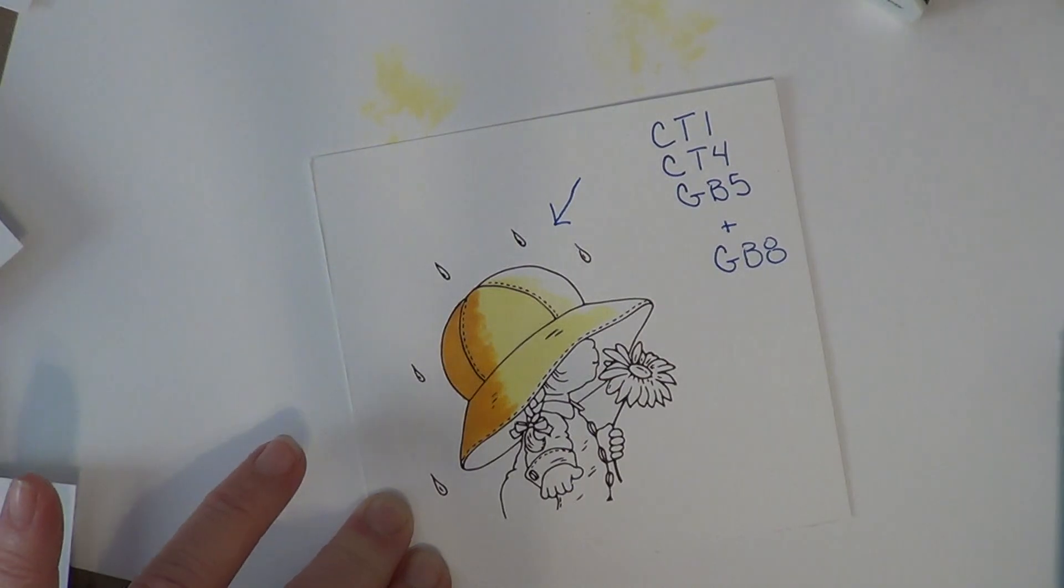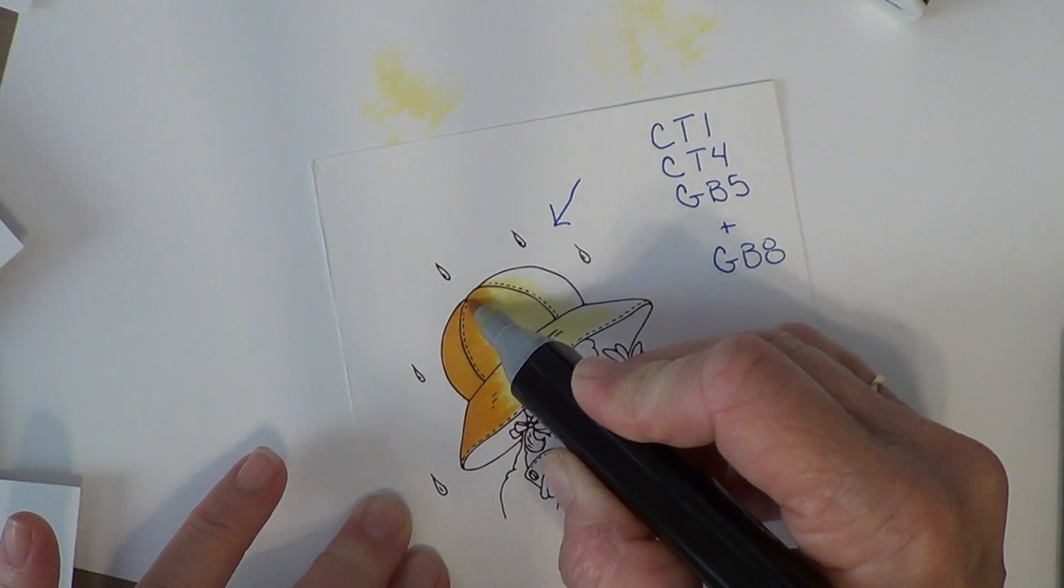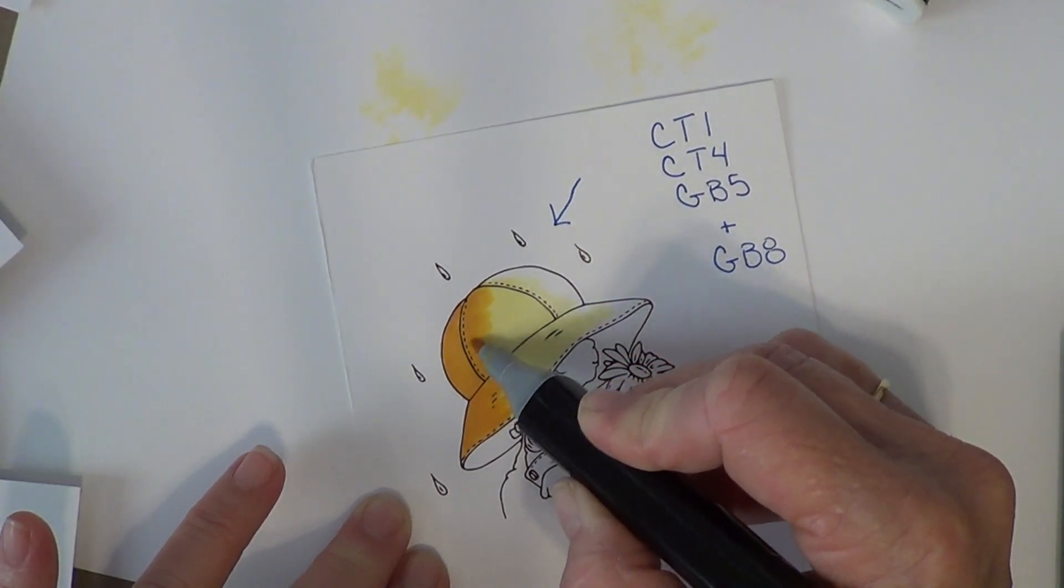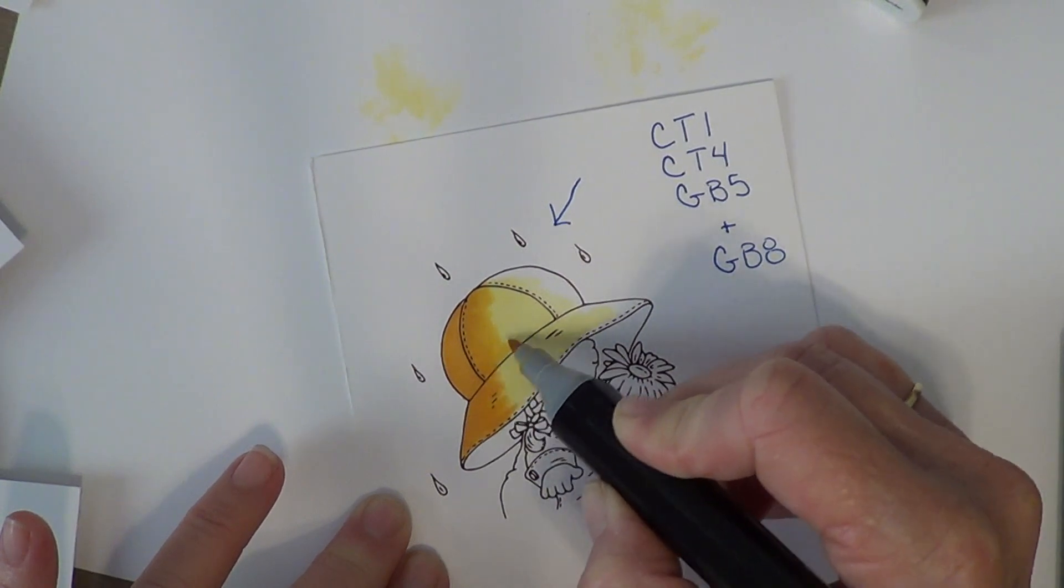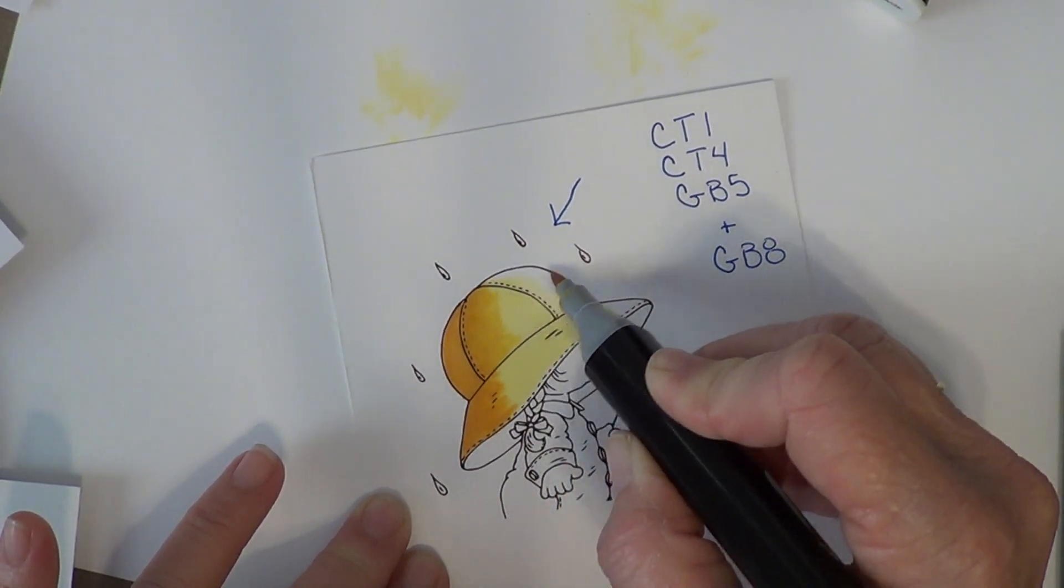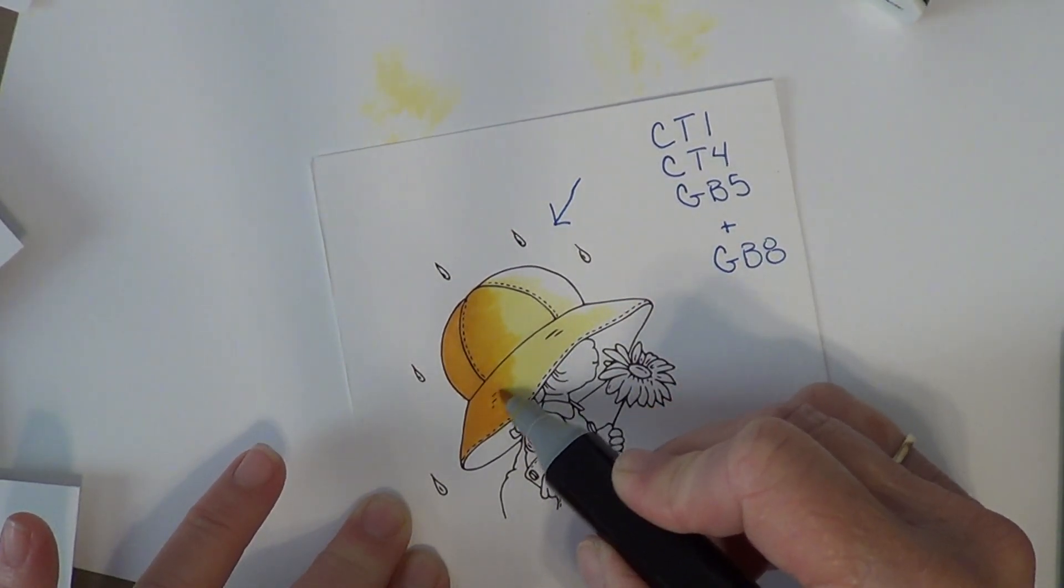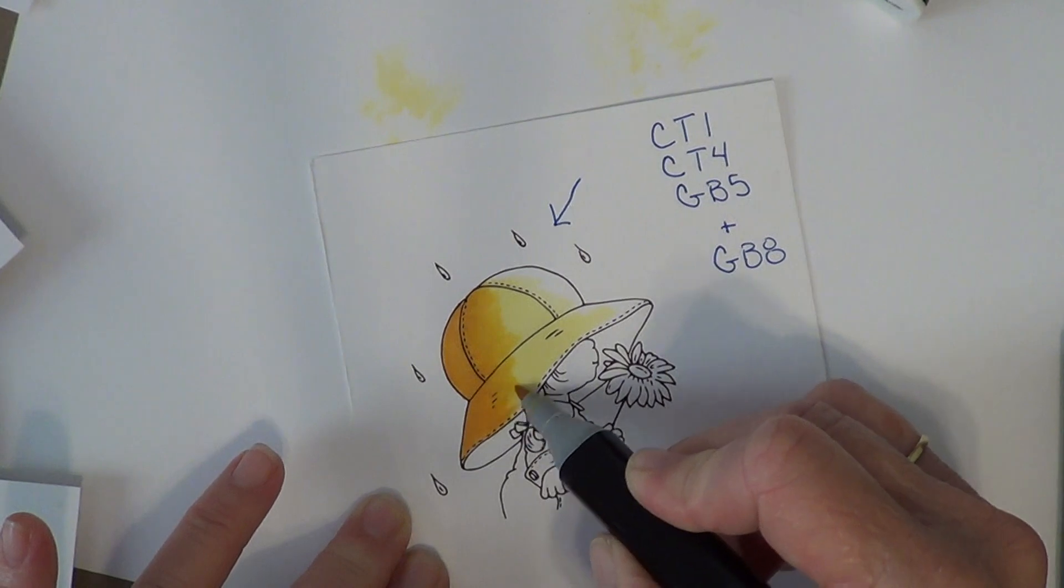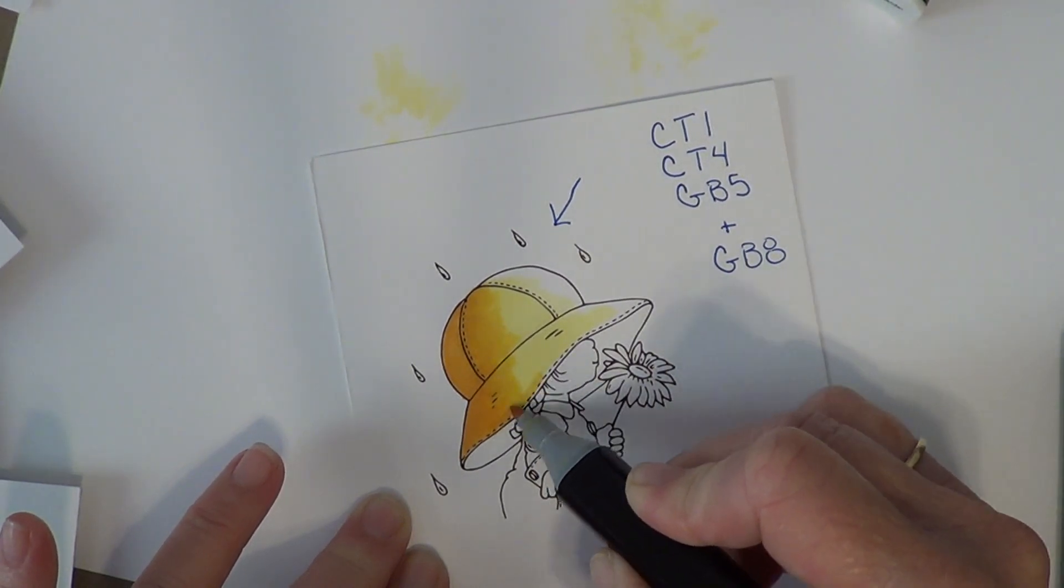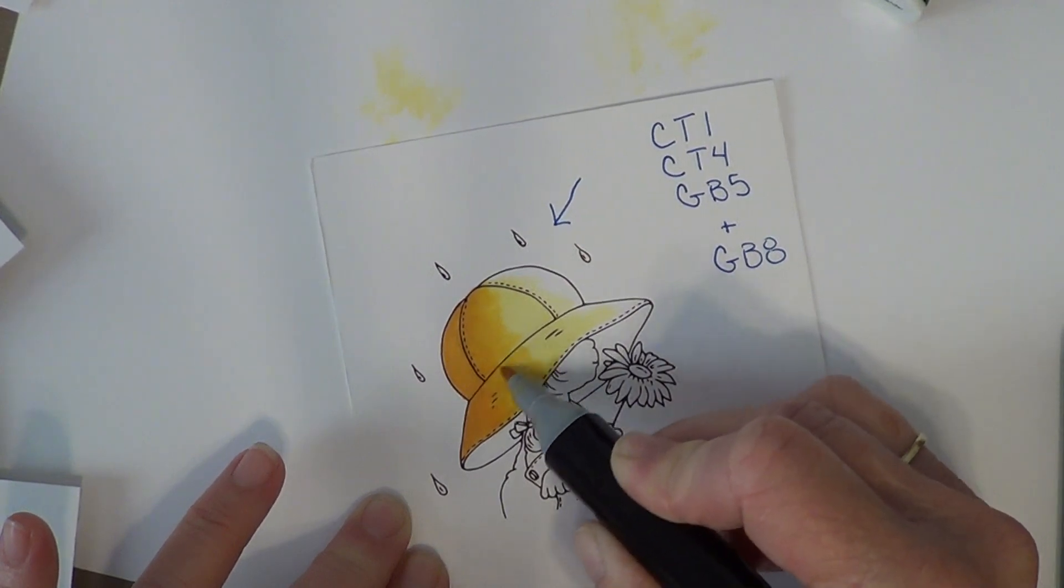Now I'm going to go to CT4, which is my medium color, and I'm going to gently overlap the two colors, which will dilute the darker color and pull it out towards my lighter color. Again, I'm flicking or coloring in the motion with my color going towards my highlight. I'm going to pull it out towards my highlight a little bit more.